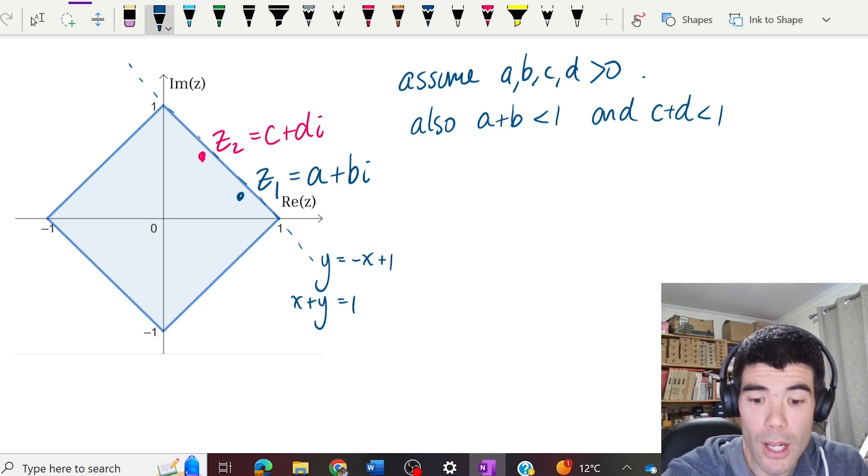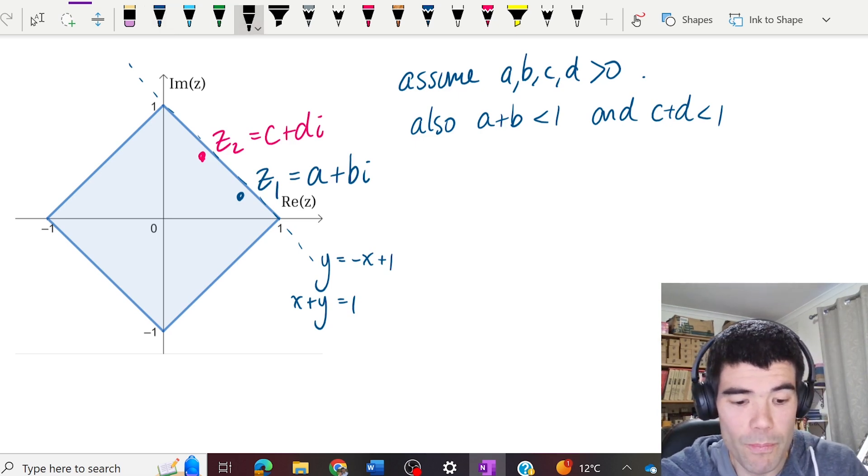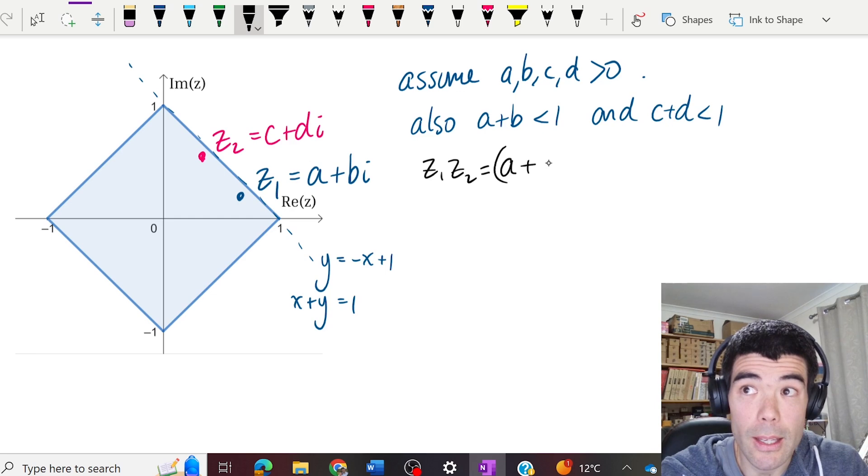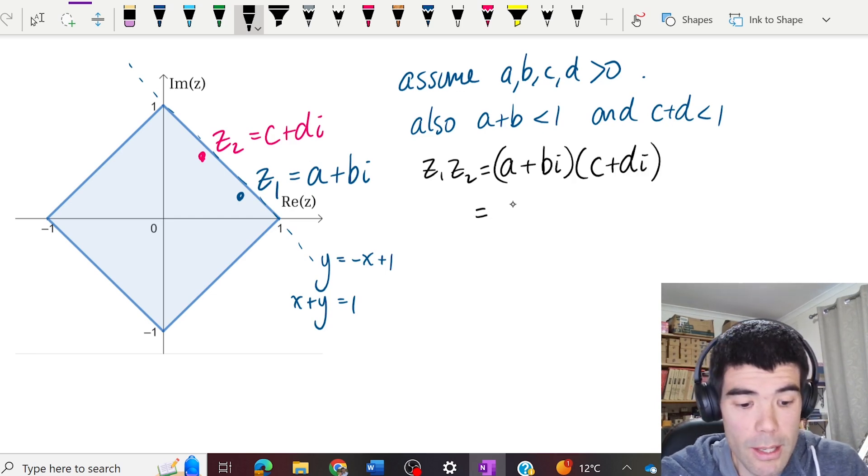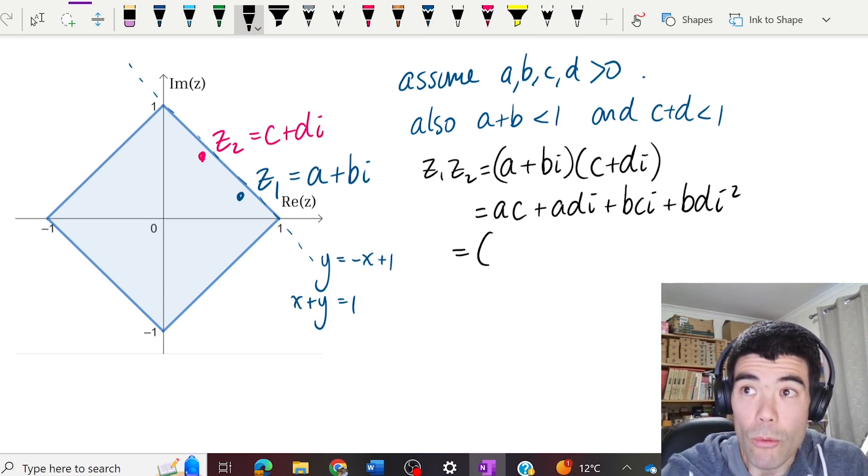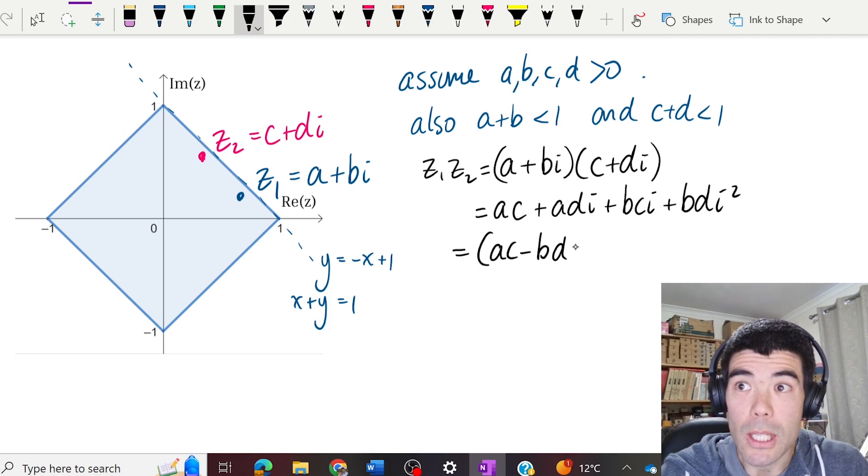And then we're going to consider the product actually in cartesian form. So z1 z2 is going to be a plus bi, c plus di. And we expand out our brackets. With the i squared term, we're going to replace that by negative 1. We can group our real part as ac minus bd.